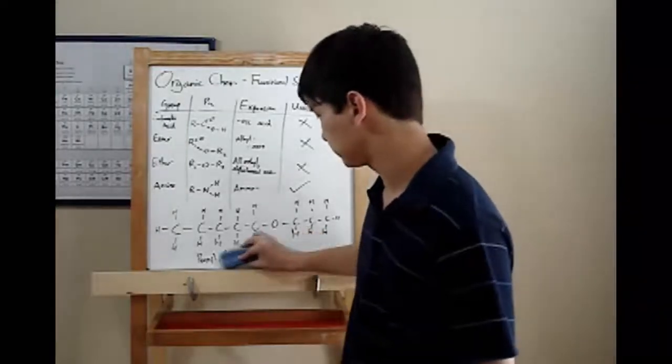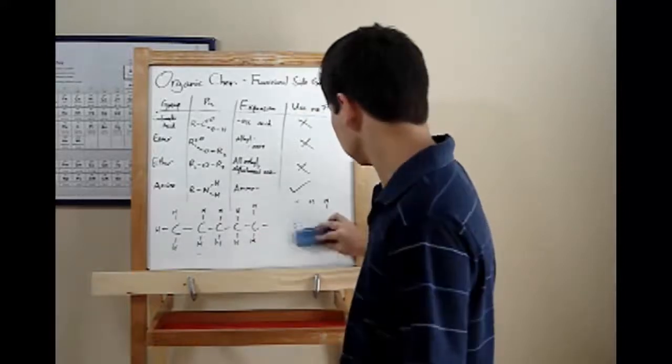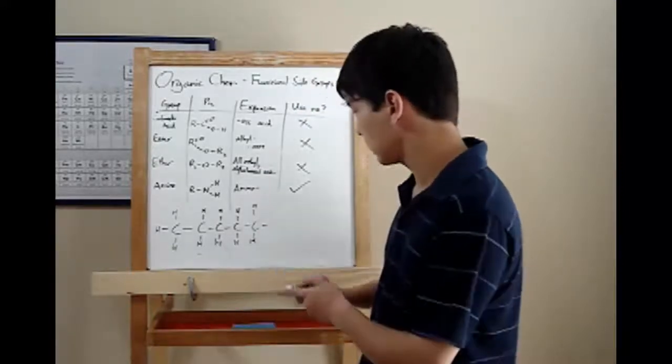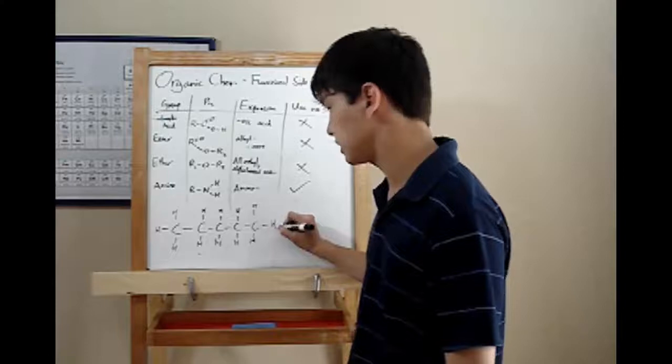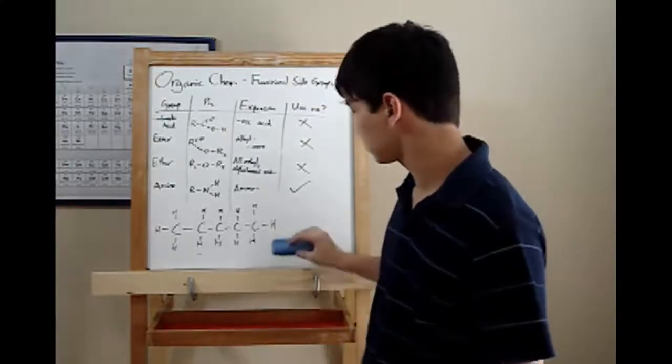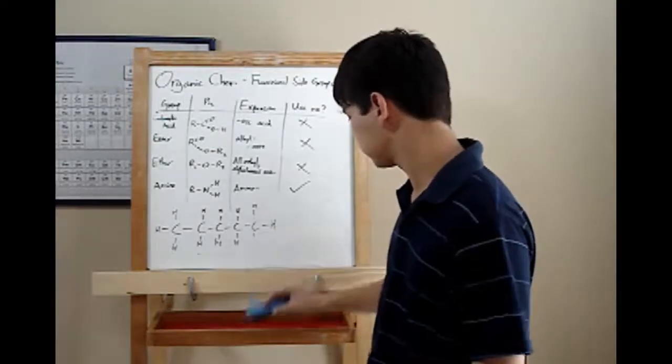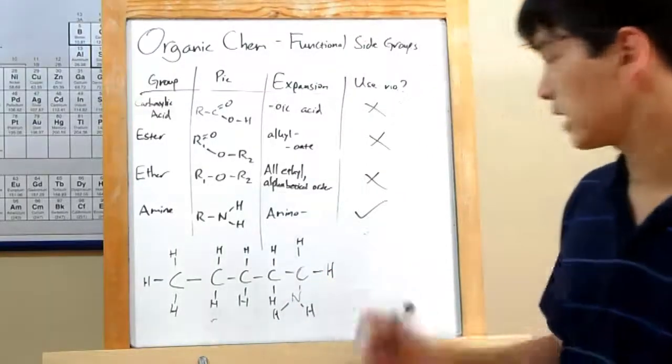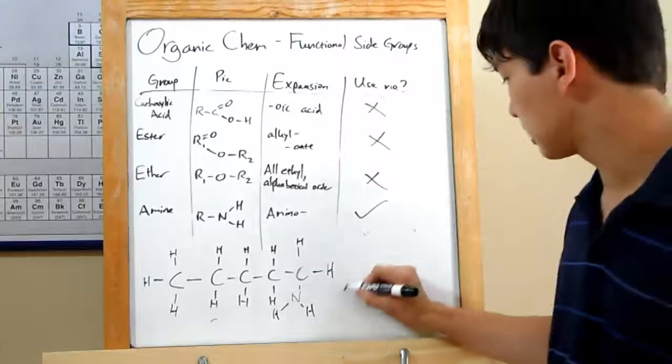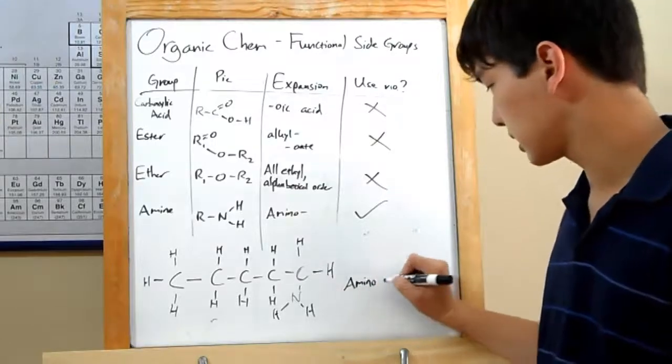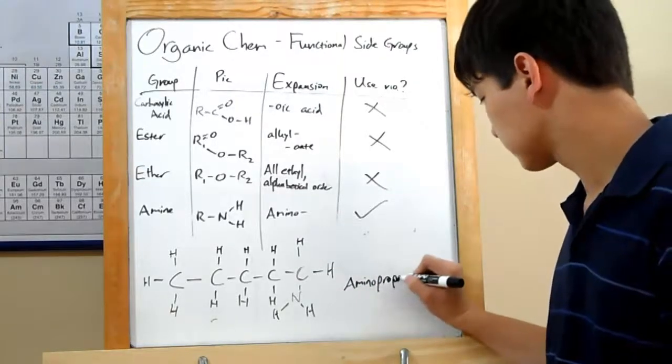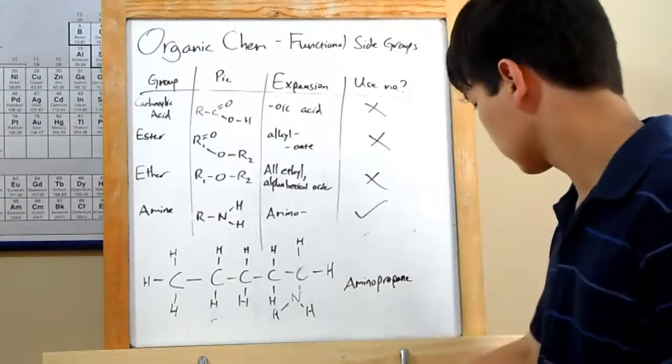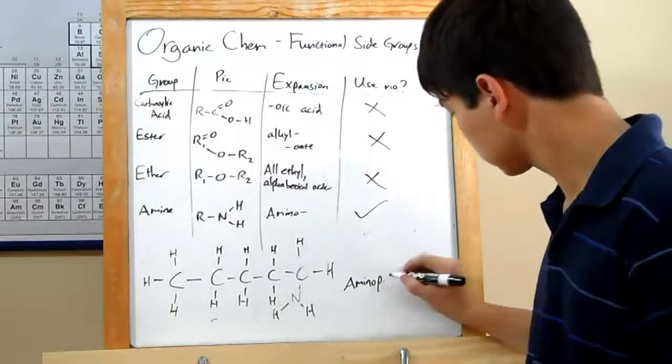All right, last up is the amine group. The amine group is simple. It's just an N that is bonded to two Hs. So let's put that actually on the end. Now, we name this by adding amino to the beginning. So amino, and then our regular name, propane. Sorry, pentane.